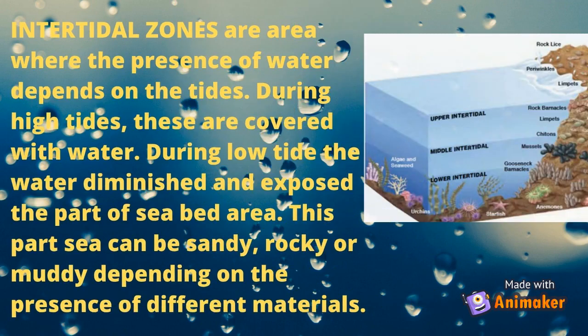Intertidal zones are areas where the presence of water depends on the tides. During high tides, these areas are covered with water. During low tide, the water diminishes and exposes parts of the sea bed. This part of the sea can be sandy, rocky, or muddy depending on the presence of different materials.